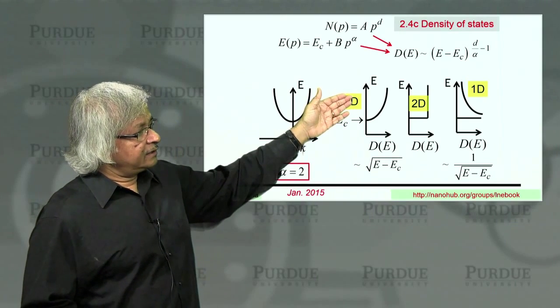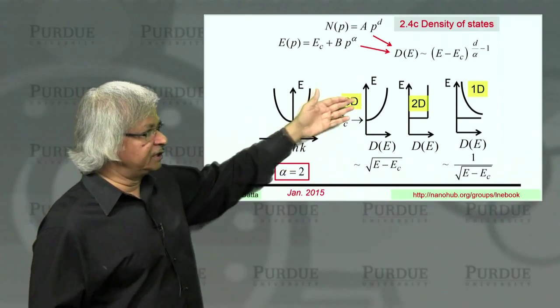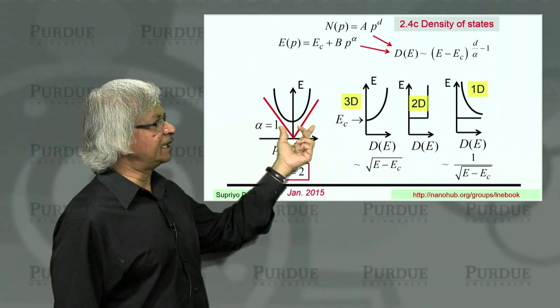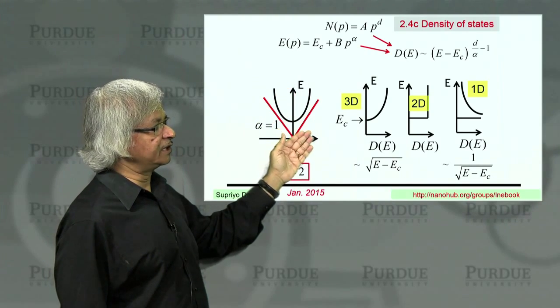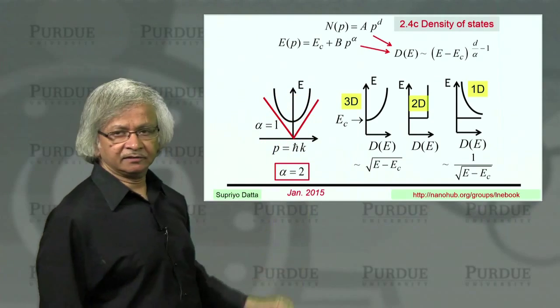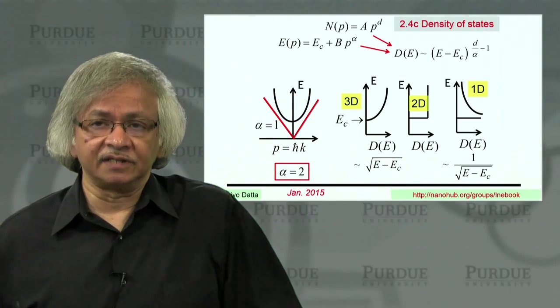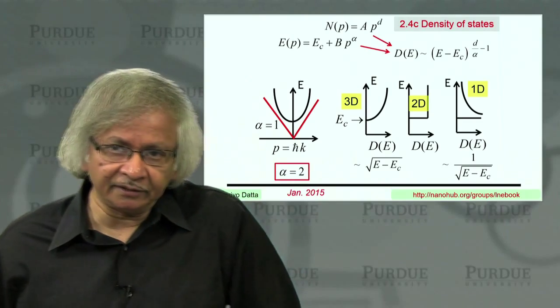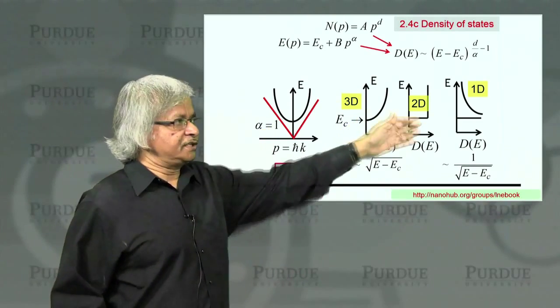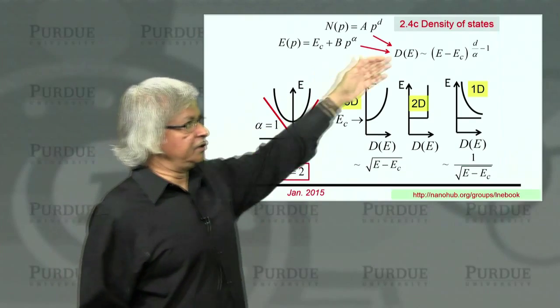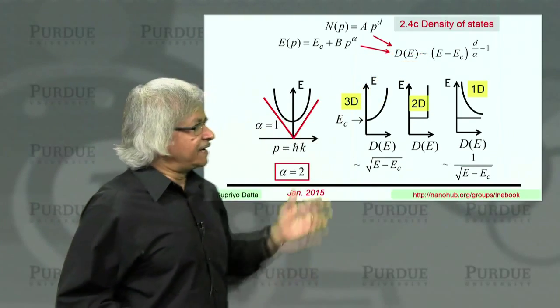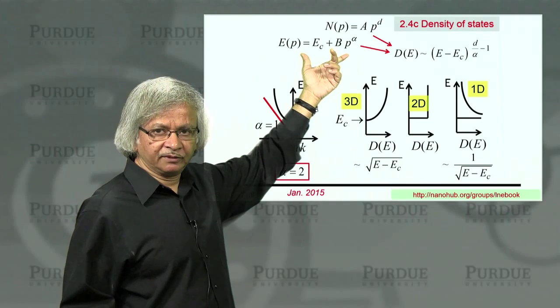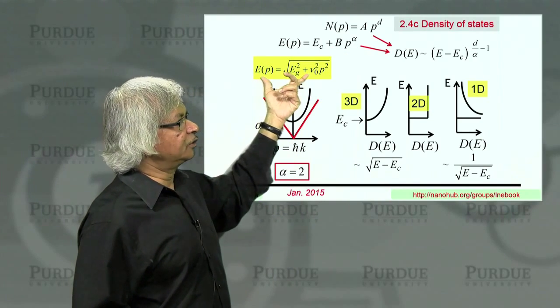Note that these results depend on both the dimensions and this alpha. For example, if you had a material with alpha equals 1, where the energy-momentum relation instead of being parabolic was linear. There's actually a material that's of great interest these days called graphene, where that's true. The common assumption is that the energy is linear with momentum. So all the results would change because now alpha equals 1.